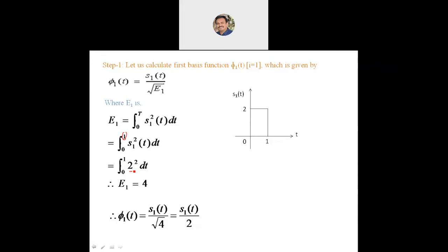Substituting the E1 value into the φ₁ formula, we get φ₁(t) = S1(t) divided by the square root of 4, which equals half of S1(t). Graphically, φ₁(t) is half of S1(t), so for the duration 0 to 1, the value of φ₁ is 1.